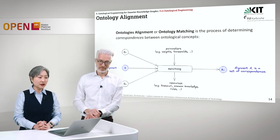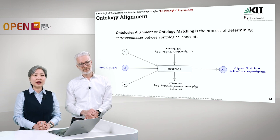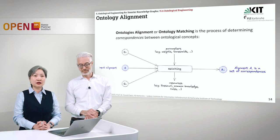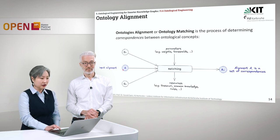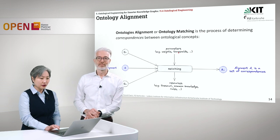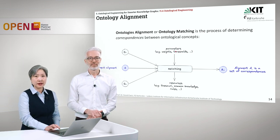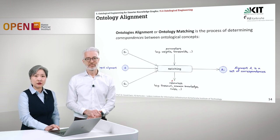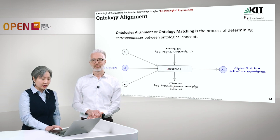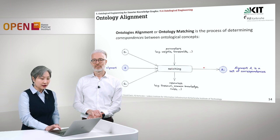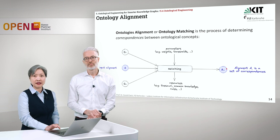The question now is how do we do ontology alignment? Ontology alignment, also known as ontology matching, is the process of determining correspondences between ontological concepts. We take three inputs: the first ontology O1, the second ontology O2, as well as an input alignment. Together with these inputs we are also aided by parameters — where we can define weights, thresholds, and so on — as well as external resources such as thesauri, common knowledge, and other rules. We process the inputs and external resources, do the matching, and get as output an alignment A which gives us the set of correspondences between O1 and O2.